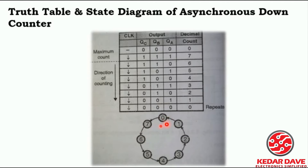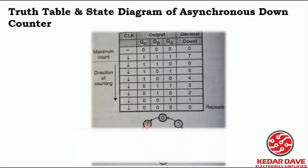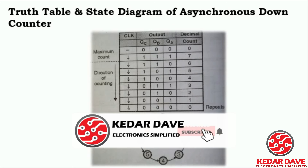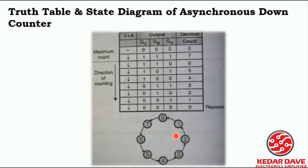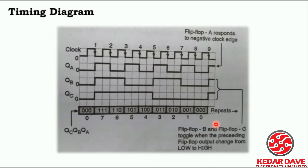Here the straight diagram is shown counting from 7 down to 1 — 7, 6, 5 — and you can see the direction is going in reverse. That is the concept of the asynchronous down counter. Let's understand it by the timing diagram.